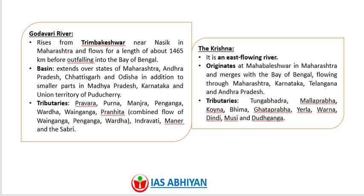About the Krishna River: it is an east-flowing river which originates at Mahabaleshwar in Maharashtra and merges with the Bay of Bengal, flowing through Maharashtra, Karnataka, Telangana, and Andhra Pradesh. The tributaries of the Krishna River are Tungabhadra, Malprabha, Koyna, Bhima, Ghataprabha, Yerla, Warna, Dindi, Musi, and Dudhganga.